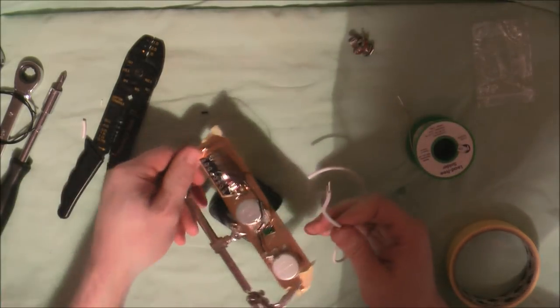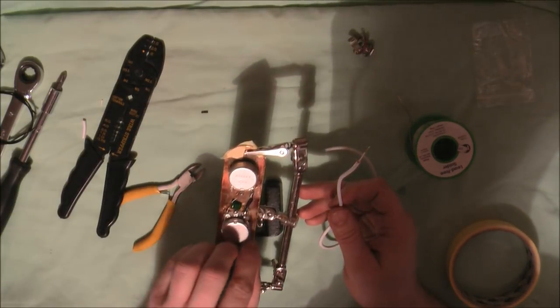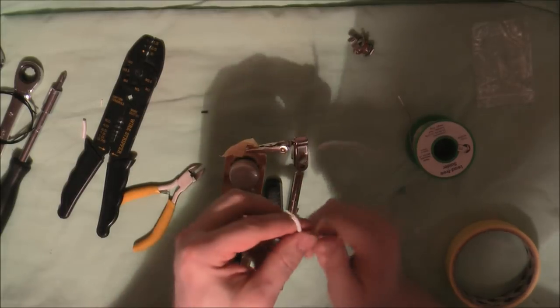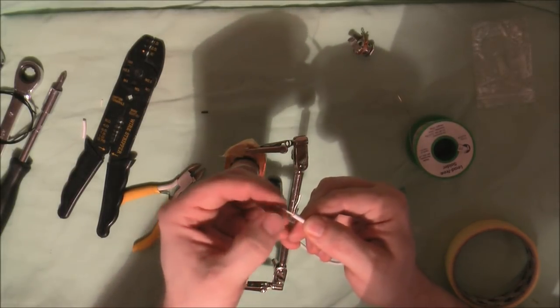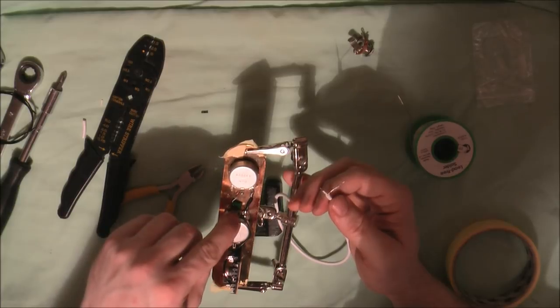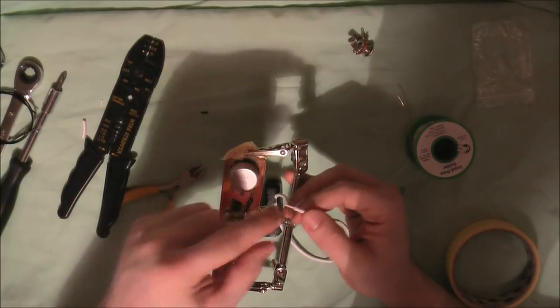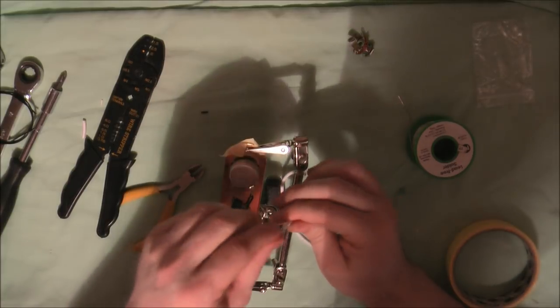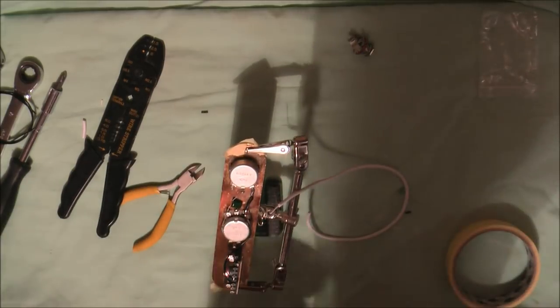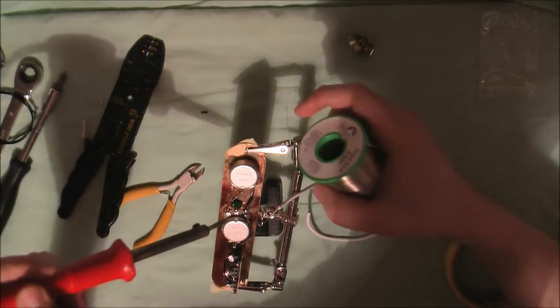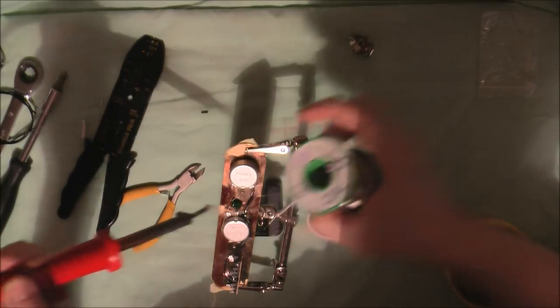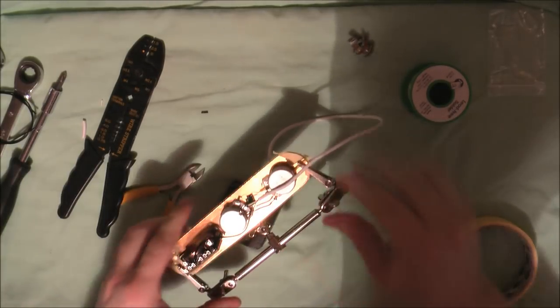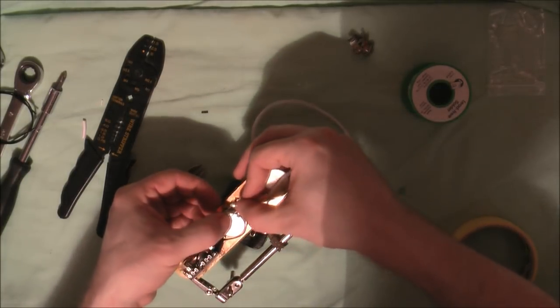So I'm going to turn the whole plate round now and we're going to fit these wires to the volume pot. So the white wire, the sheathed wire, is going to go to the middle lug on the volume pot. And the larger wire, the bare one, is going to go to the back of the volume pot. Okay, so firstly the centre.